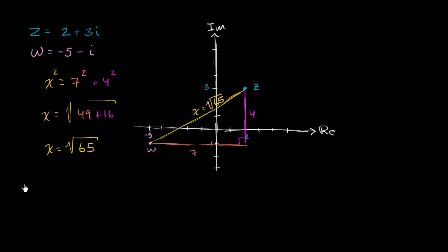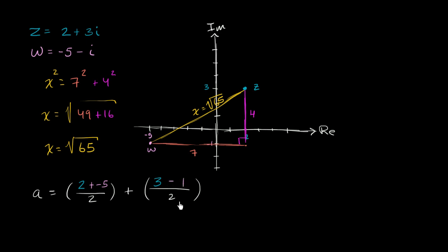Let's say some complex number a is the midpoint. Its real part is going to be the mean of the two real parts: 2 plus negative 5, all over 2. Its imaginary part is going to be the mean of the two imaginary parts: 3 plus negative 1, all over 2, times i. So the real part is negative 3 over 2, which is negative 3 halves. The imaginary part is 3 minus 1 equals 2, divided by 2 equals 1. So the midpoint is negative 3 halves plus i.